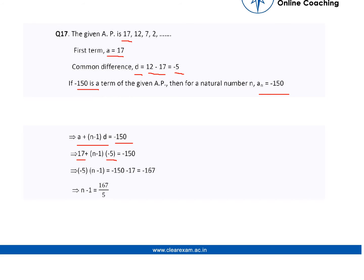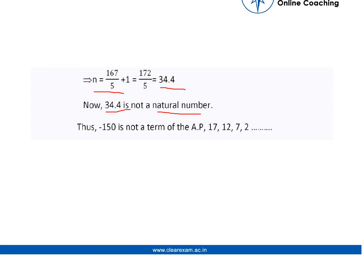We finally get n minus 1 equal to 167 upon 5. Thus on further simplification, we get the value of n as 34.4. However, 34.4 is not a natural number; instead it is a decimal.